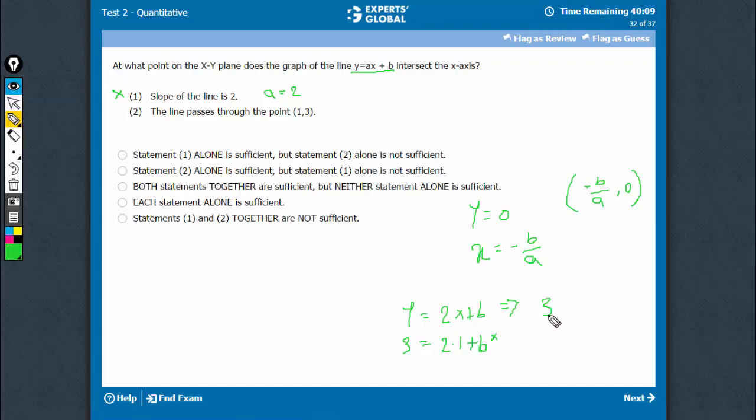This says that 3 equals a, x is 1, plus b. So I have put 1, 3 in this equation. y equals 3 and x equals 1. This tells me that a plus b equals 3.